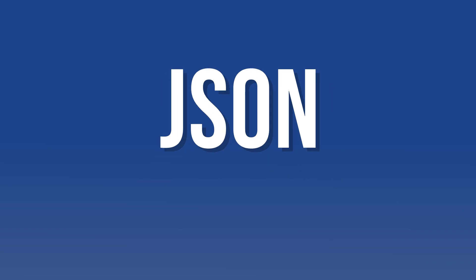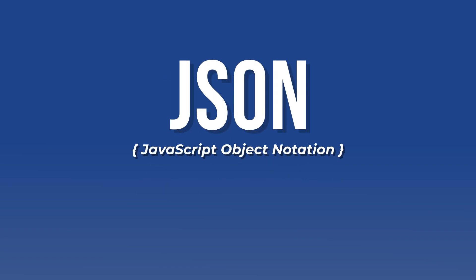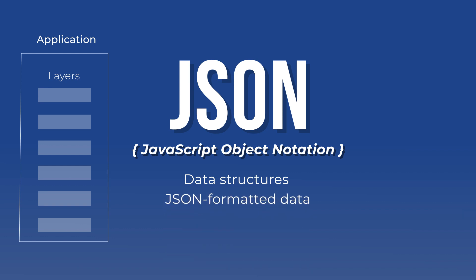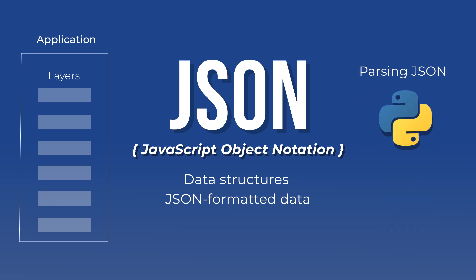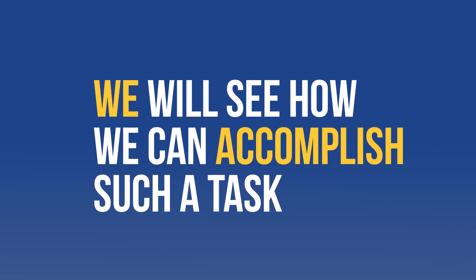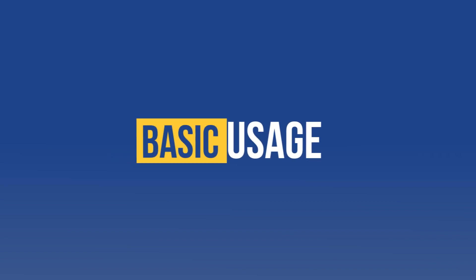JSON, also known as JavaScript Object Notation, is widely used to represent data structures and is frequently used to exchange data between different layers of an application. We probably know how to interact with JSON formatted data using programming languages such as Python, but what if we need to interact with it from the command line or in a bash script? In this tutorial we will see how to accomplish that using the jq utility and learn its basic usage.